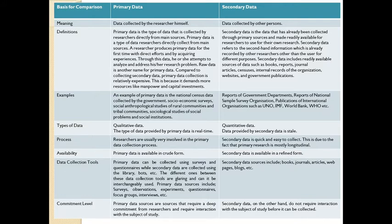Primary data sources include surveys, observations, experiments, questionnaires, focus group discussions, and interviews. Secondary data sources include books, journals, articles, web pages, and blogs. Regarding commitment level: primary data sources require deep commitment from the researcher and interaction with the subject of study, meaning the researcher conducts fieldwork and interacts with respondents. Whereas secondary data does not require interaction with the subject before it can be collected.